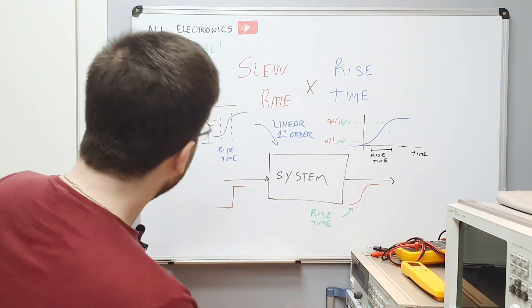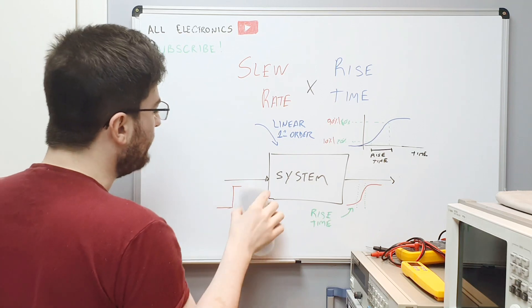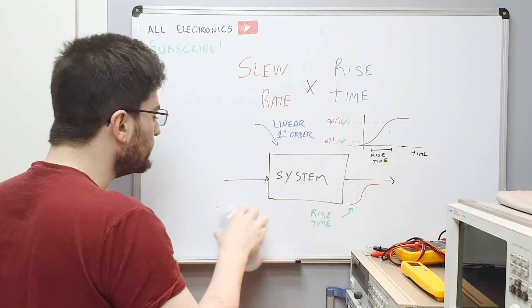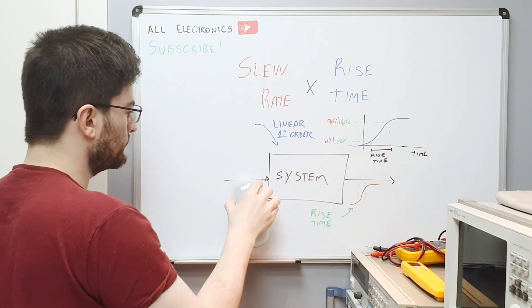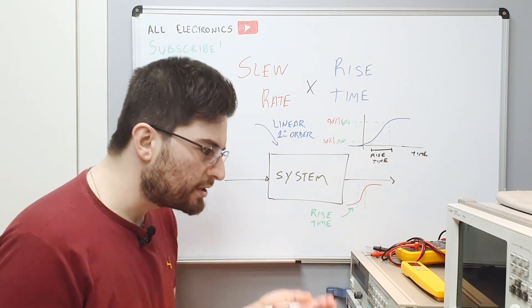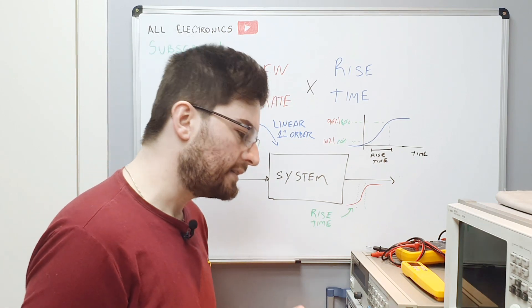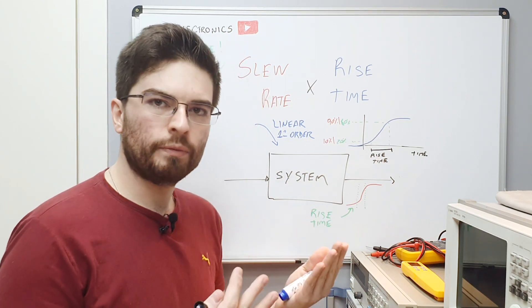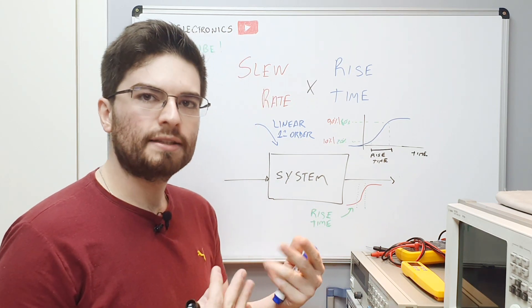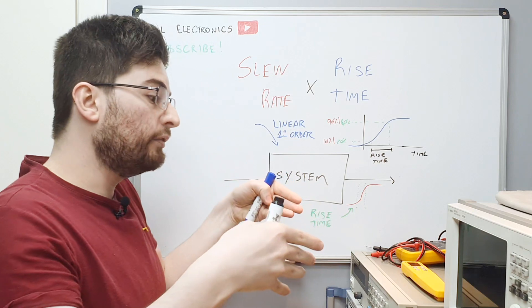So let's think about putting a very large signal here. What is a large signal? It's a signal that is large enough that our linearization perspective does not work anymore.